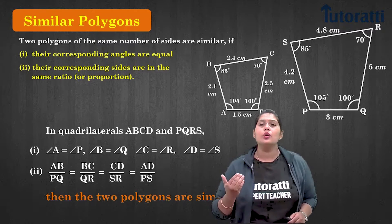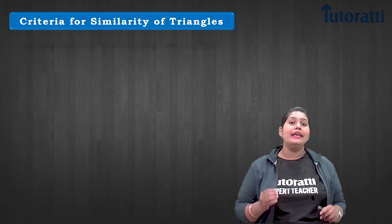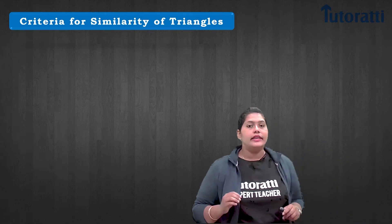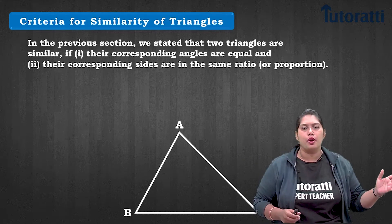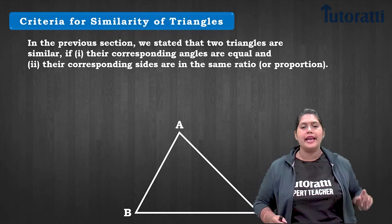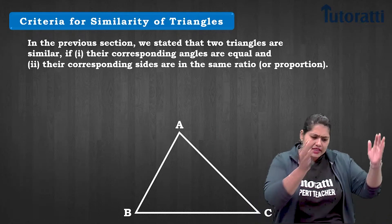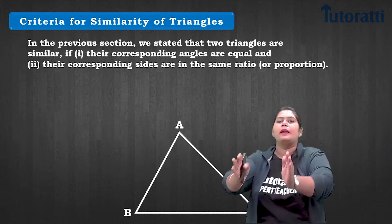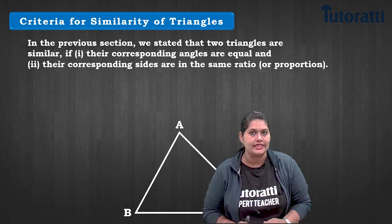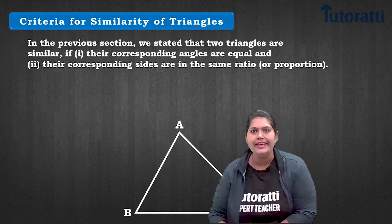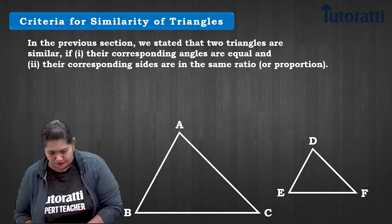Now let's understand the criteria for similarity in triangles. As with polygons, the corresponding angles must be congruent and the ratio of the sides must be equal. The same concept applies to triangles — in a polygon we had four sides, but in a triangle we have three sides. Let's consider triangle ABC and triangle DEF.